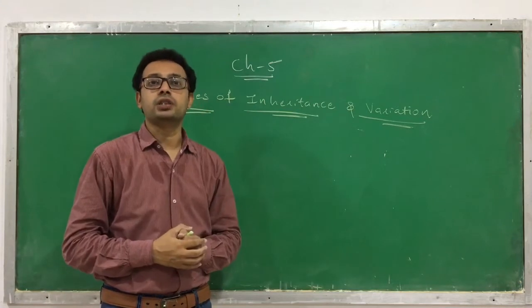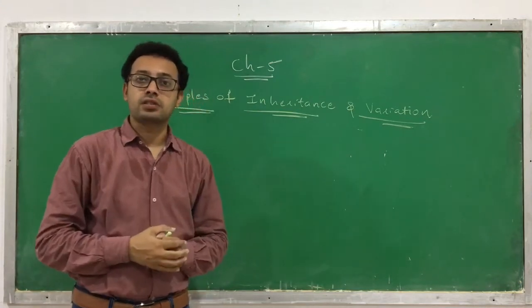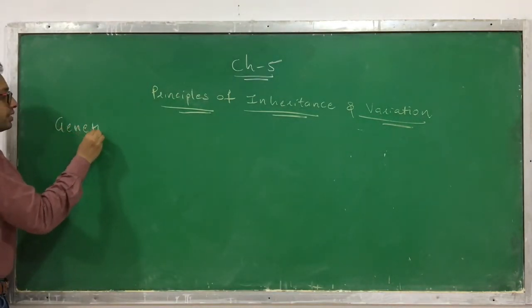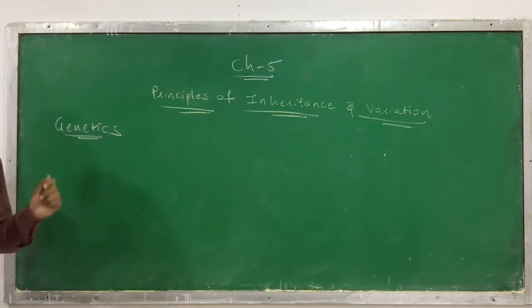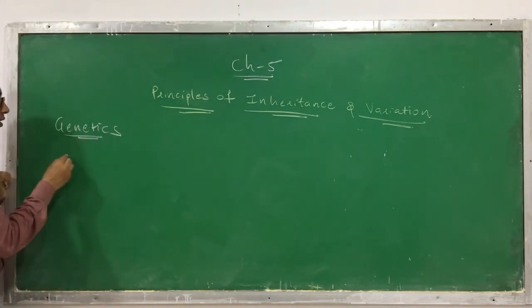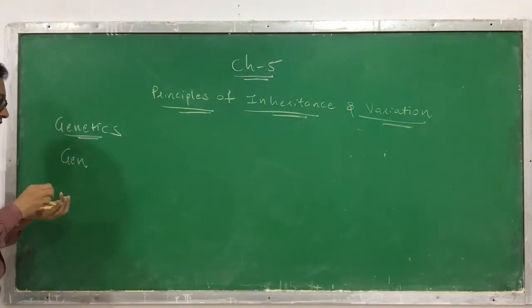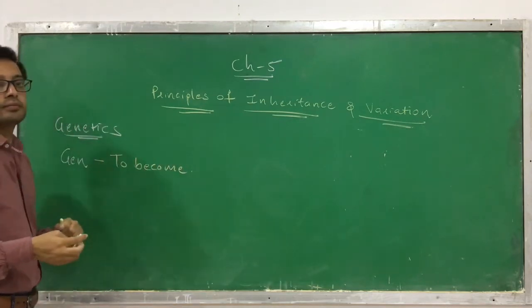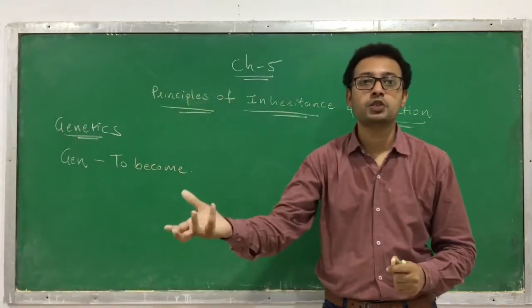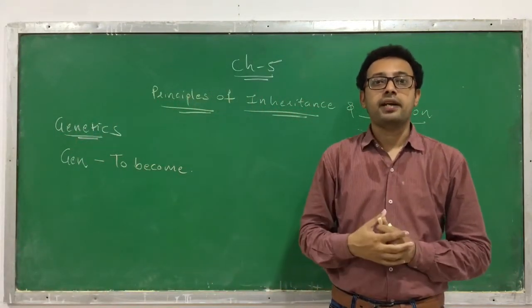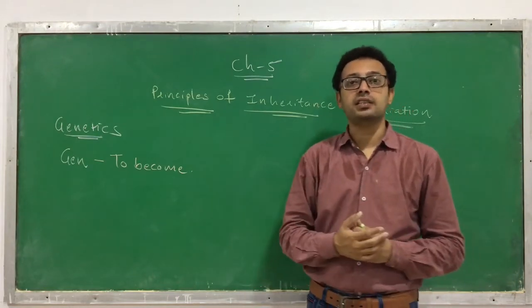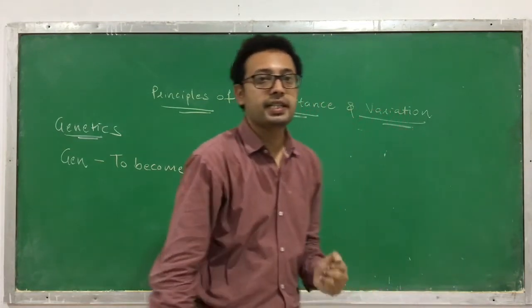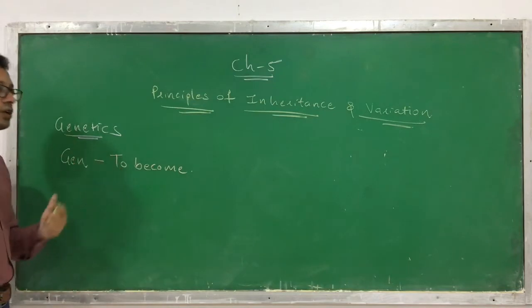There is a branch of biology that deals with such answers, and we call it genetics. Genetics is a word derived from a Greek word — 'gen' — meaning 'to become'. That means how a new human being is produced from the parent, or how a mango is produced from its seed. That is what we learn in this branch of biology called genetics.